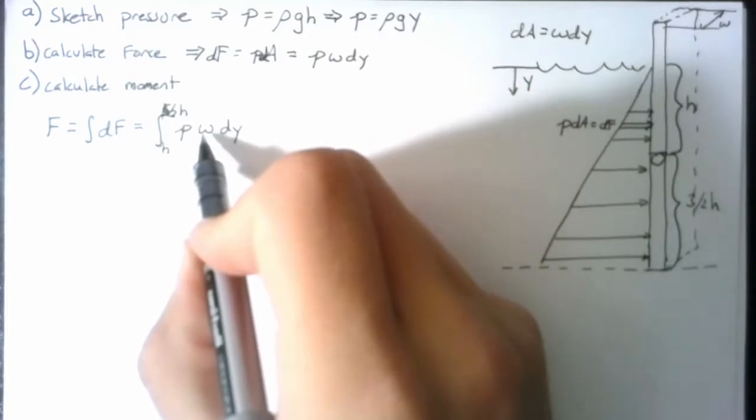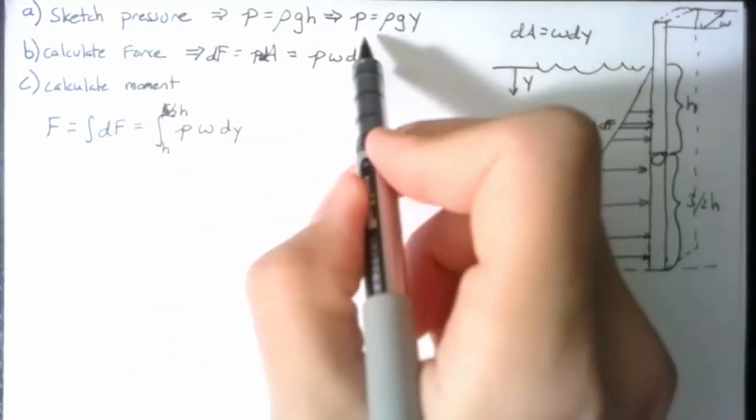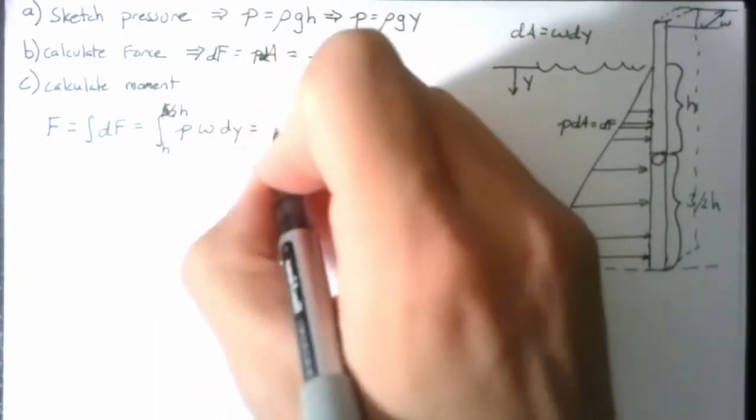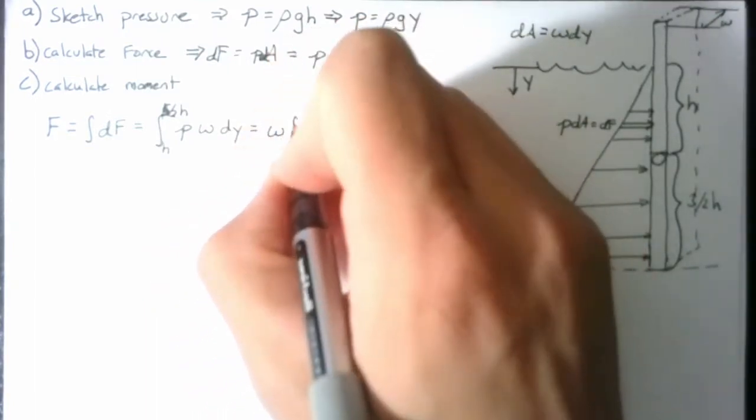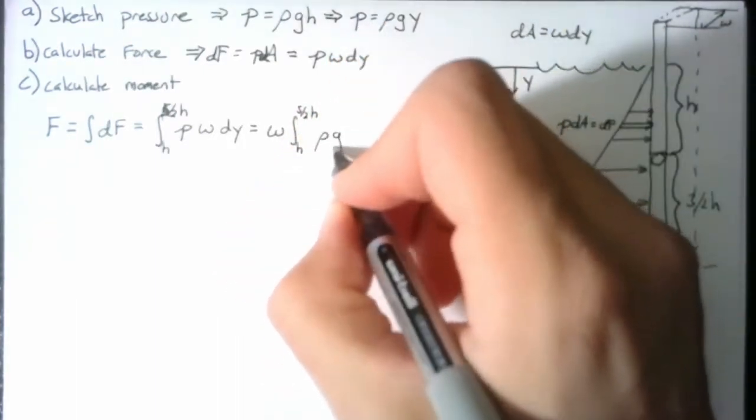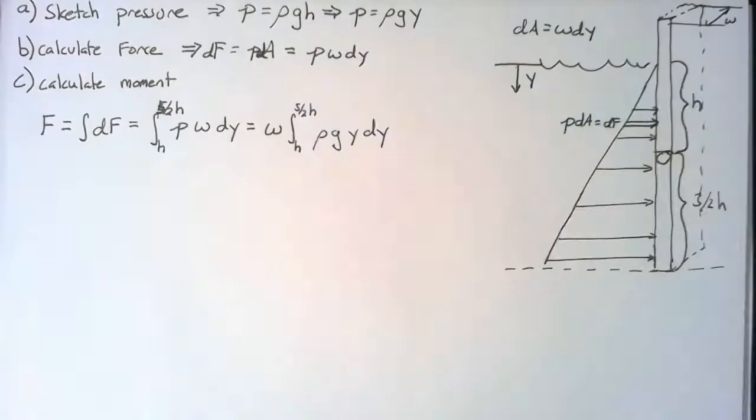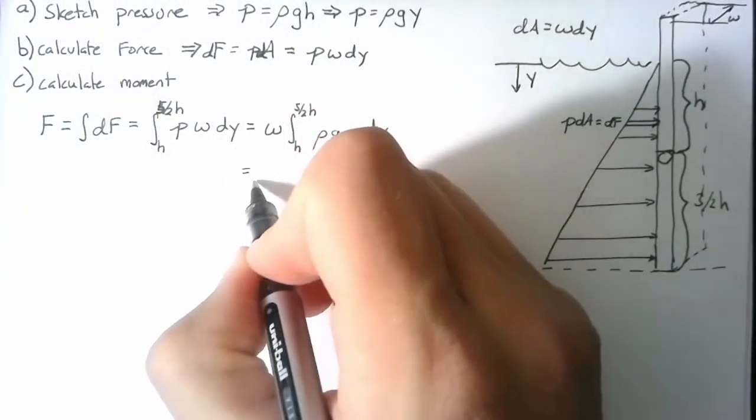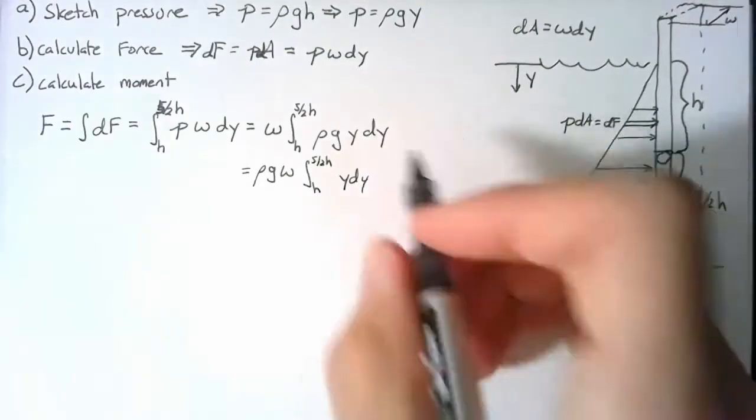We said w is a constant here, and we know what p is. So now we can rewrite this as w times the integral from h to 5 halves h of rho g y dy. Doing just a little more work, we can move these outside of the integral as well. And this integral is easy to perform.